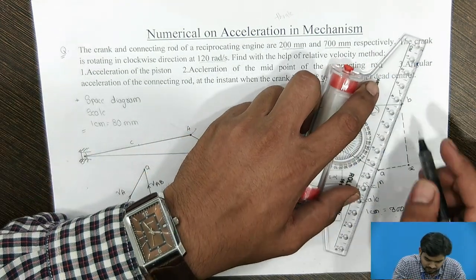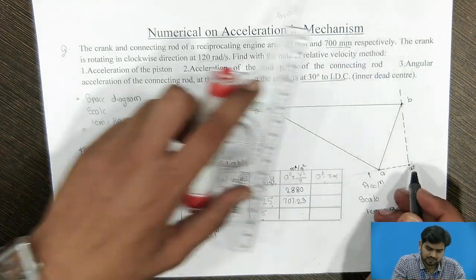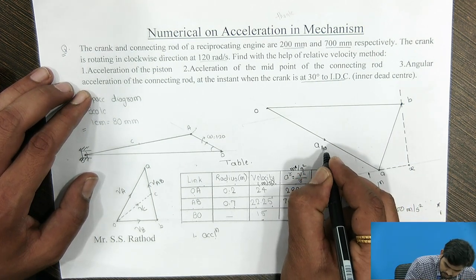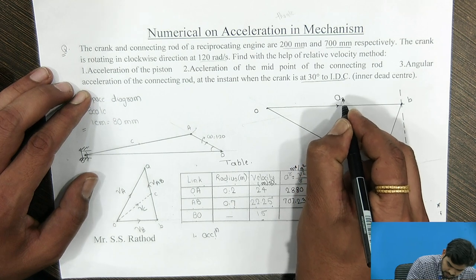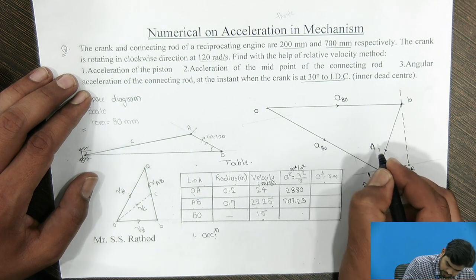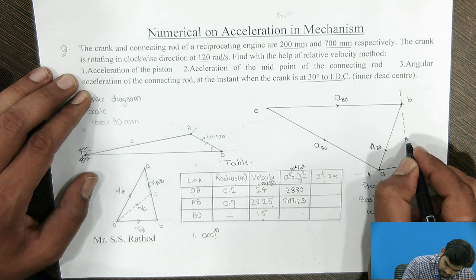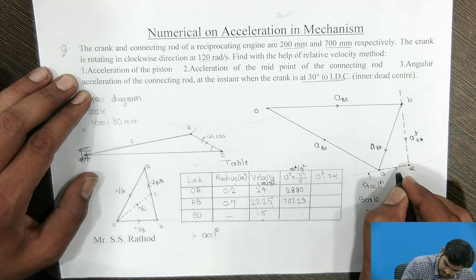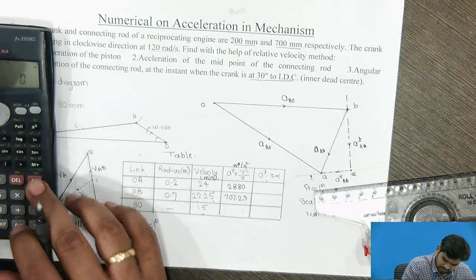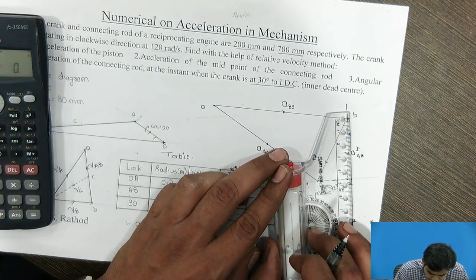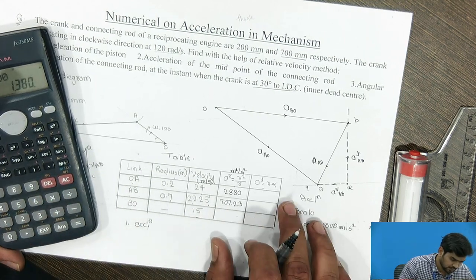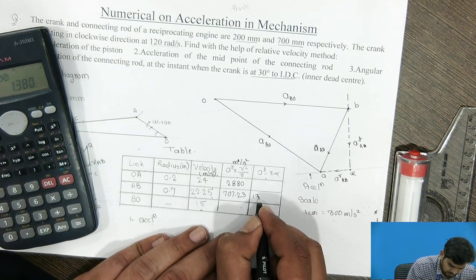Joining the relevant points gives the acceleration of A with respect to O, and the acceleration of A with respect to B. The radial component of A with respect to B is known. Measuring the diagram, the tangential component length is 4.6 cm, and multiplying by the scale of 300 gives the tangential component of AB as 1380 m/s².